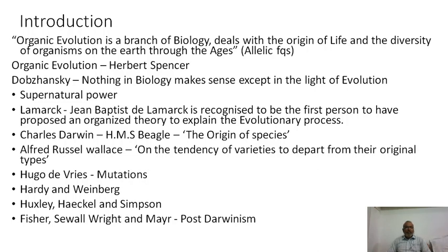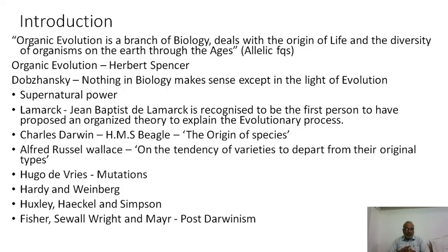Both Darwin and Wallace proposed natural selection, but Darwin could produce more evidence. Later, the followers of Darwin — the neo-Darwinists — proposed several theories in support of Darwinism. The mutation theory was proposed by Hugo de Vries, allelic frequency changes and equilibrium were explained by Hardy and Weinberg, and Huxley, Haeckel, Simpson, Fisher, Sewall Wright, and Mayr explained the modern synthetic theory of evolution.